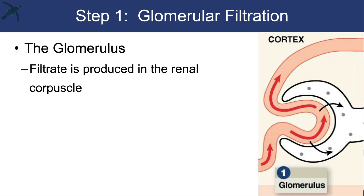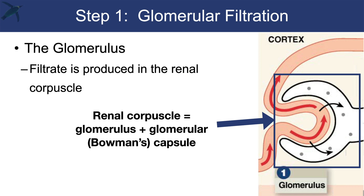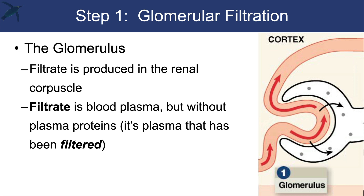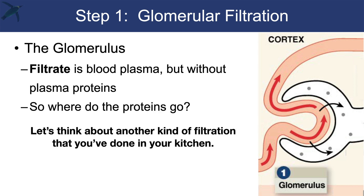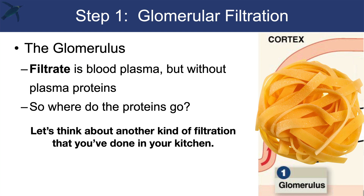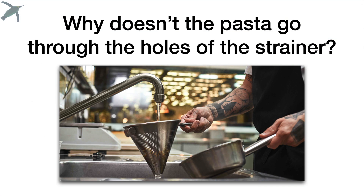So now I've got this cleaner image, and I'm going to clean up and make the language more clear. The glomerulus — filtrate is produced in the renal corpuscle. Two questions immediately: what's the renal corpuscle? I answer that right away. And what is filtrate? Filtrate is blood plasma but without plasma proteins — it's plasma that has been filtered, that's why we call it filtrate. Their text didn't say that, but that's kind of the most important point. And then you have another question: where do the proteins go? So I'm going to launch into some question and answer — if it's a live Zoom class, or in a video I'll go into an analogy everyone can relate to. Everyone watching has made pasta, so why doesn't the pasta go through the holes of the strainer? This is a lot more interactive in a live class, or relatable if it's a video.